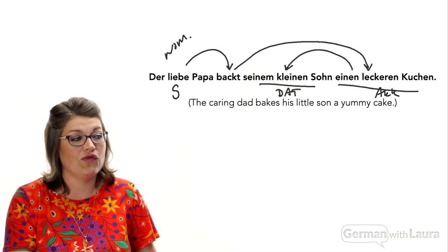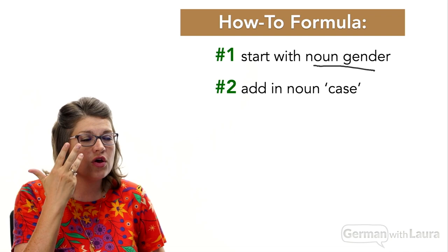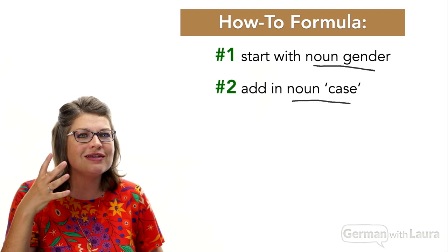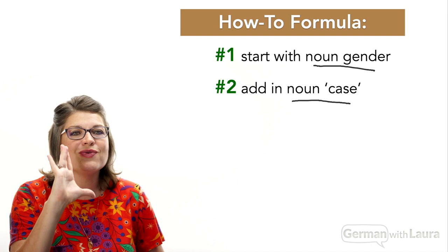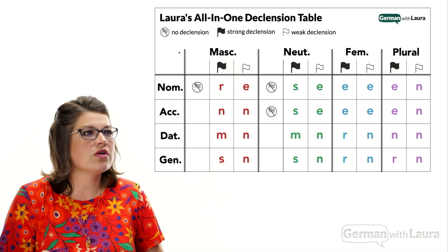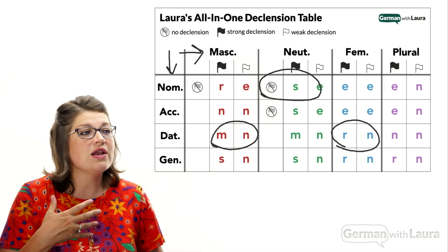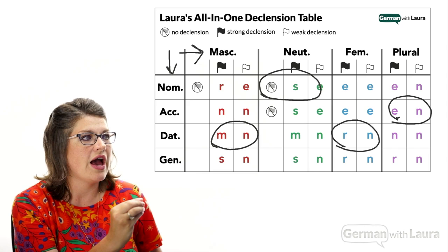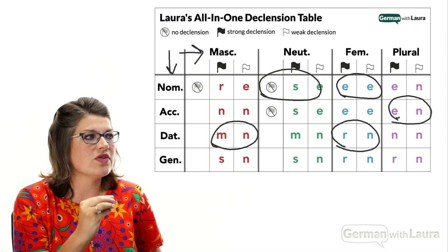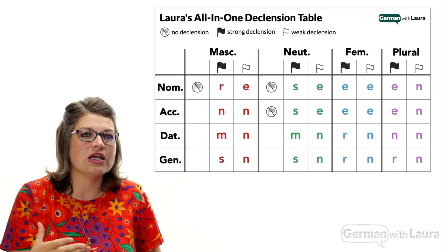With these first two elements of our formula — knowing the noun's static unchanging gender (masculine, feminine, neuter, plural) and knowing the noun's case (the role it's playing in the given sentence: nominative, accusative, dative, or genitive) — once you have those two pieces of information, you can get yourself to the correct intersection of the all-in-one declension table. The gender goes across the top, the case goes down the side, so that you might be in the masculine dative, or the neuter nominative, or the feminine dative, or the plural accusative. Sometimes we have duplicate declensions, but all the rest of the time we have two or even three different options that we somehow have to know how to choose from.